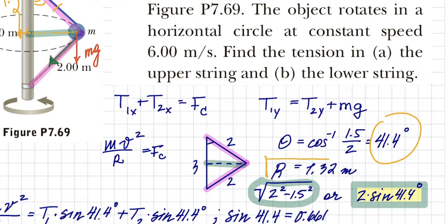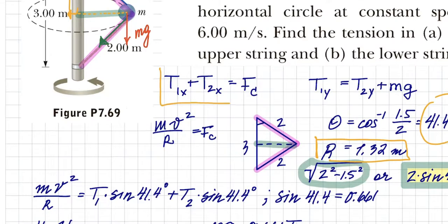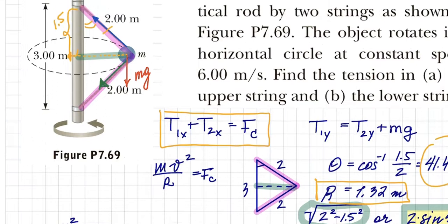So ultimately, the radius of the rotation right here is one point thirty-two meters. Now, going back to this, centripetal force is the sum of the horizontal components, so each of the horizontal components—